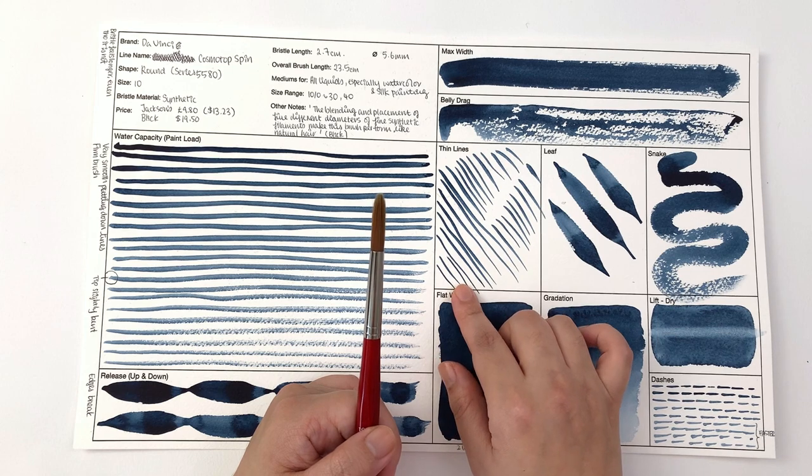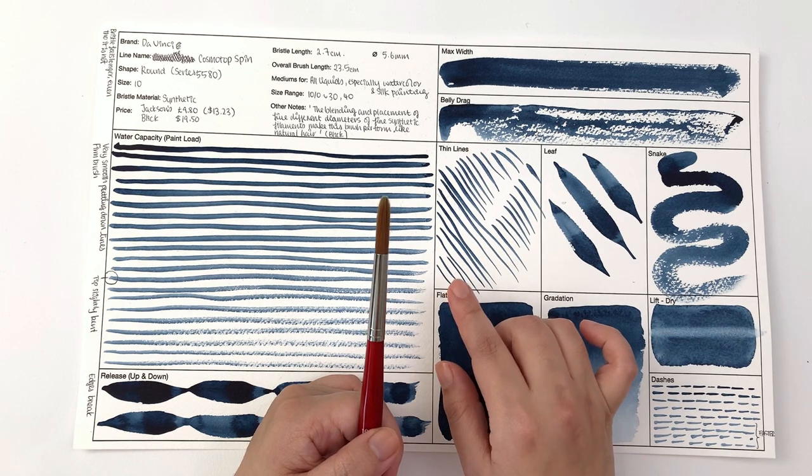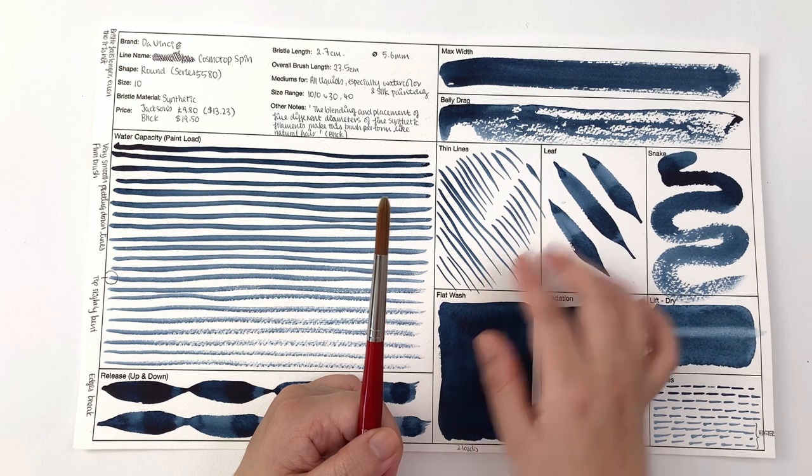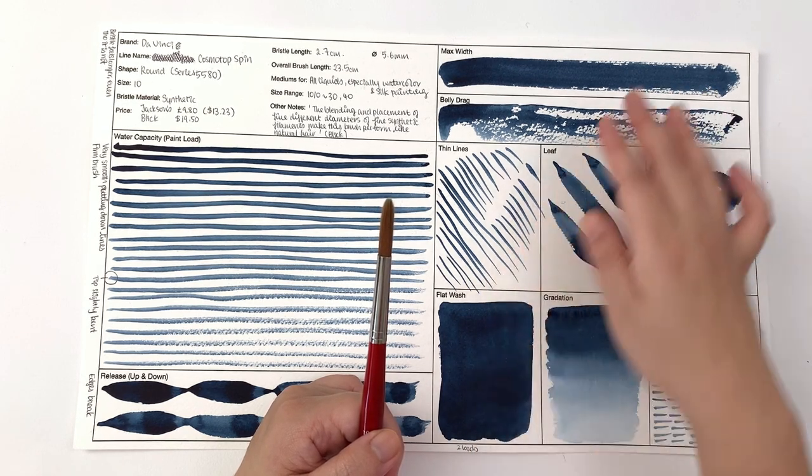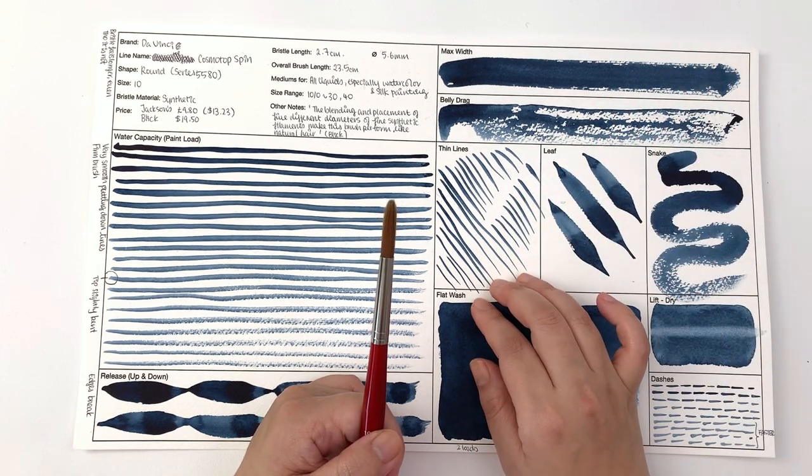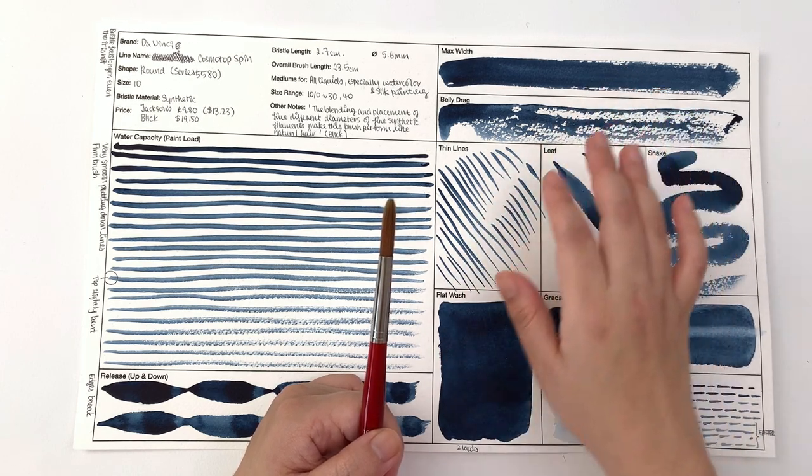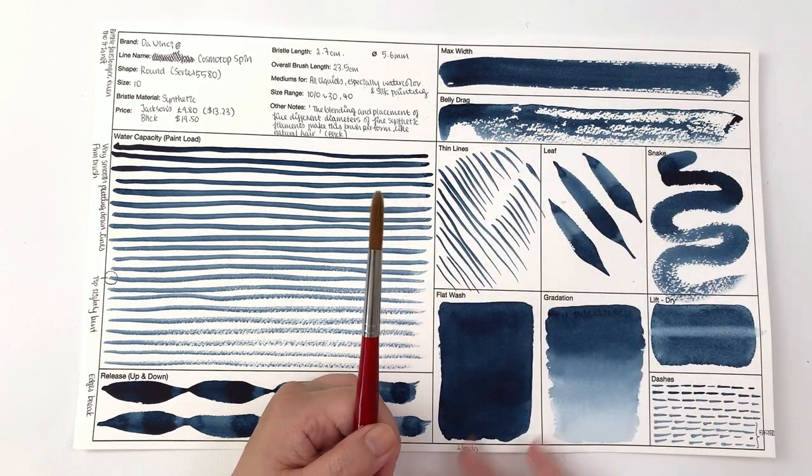As for thin lines you can get pretty thin lines but I would say that for the range of thickness you don't have a huge amount. These aren't the thinnest of thin lines that I've managed to create with brushes.